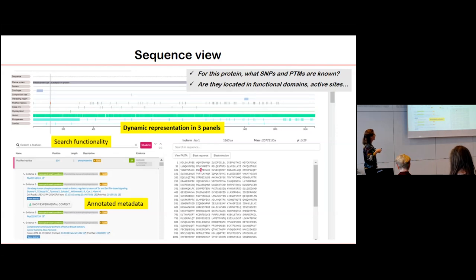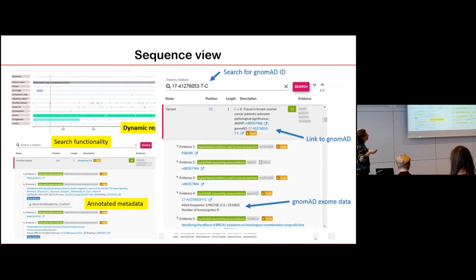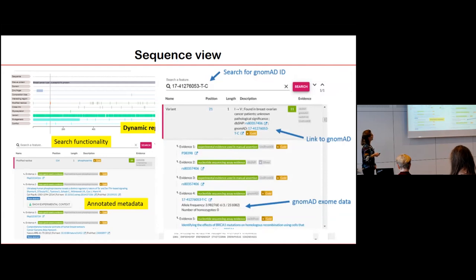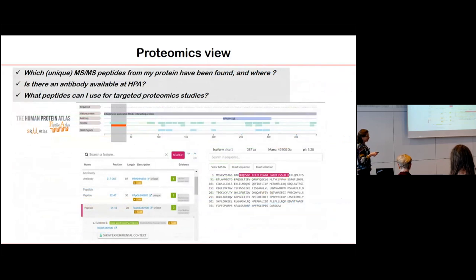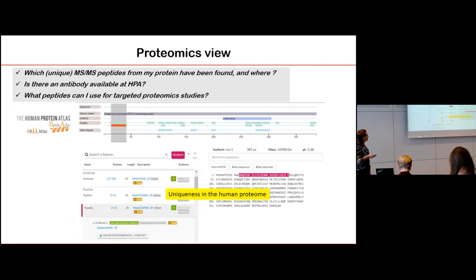There is also a search functionality: if you look for a particular gnomAD identifier, you will immediately find the variant with a link to the gnomAD database and the frequency of the variant. The proteomics view is built on the same principle and shows the peptides identified for a given protein and the epitopes of antibodies produced against this protein. For each peptide we provide information about its uniqueness in the human proteome and metadata about the sample in which it was found.